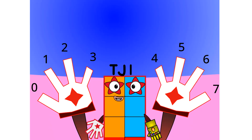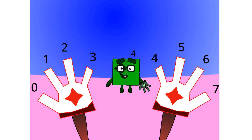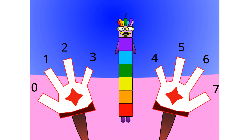Oh wow. Looks like I am no longer Octoblock, but I am still called 8. This base has 8 digits: 0, 1, 2, 3, 4, 5, 6, and 7. Let's count in octal: 1, 2, 3, 4, 5, 6, 7, 10.